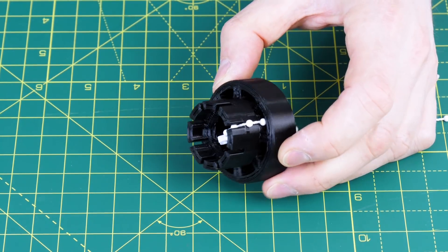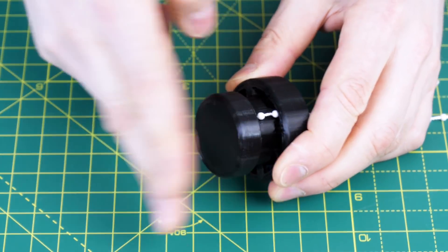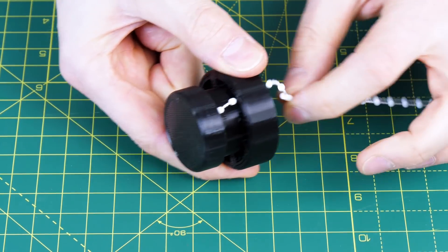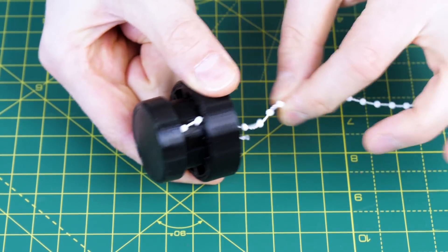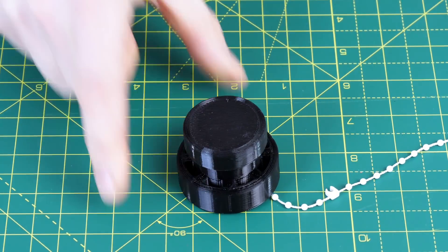I 3D printed some TPU flexible ends that just push on and that means the cord won't pull out while it's slack and I'm assembling it, and it also keeps it nice and tidy and makes feet for the structure.